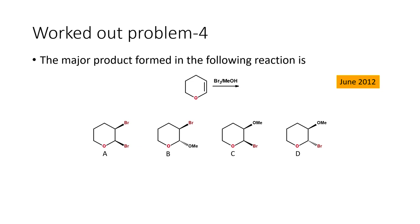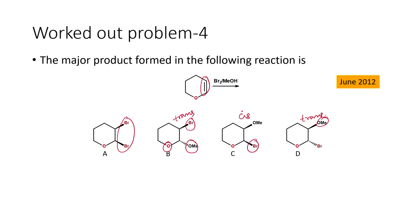Problem four: the major product formed when an alkene is treated with bromine and methanol. Four products are possible: a dibromo derivative, or three products where bromine and a methoxy group are introduced — one trans product with methoxy adjacent to the oxygen, one cis product, and another trans product with methoxy further from the oxygen.